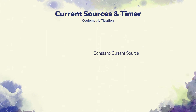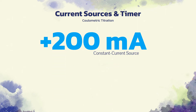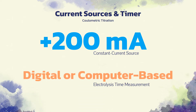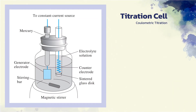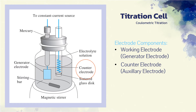The constant current source for a coulometric titration is an electronic device capable of maintaining a current of 200 milliamperes or more, that is constant to a few hundredths percent. Such constant current sources are available from several instrument manufacturers. The electrolysis time can be measured very accurately with a digital timer or a computer-based timing system. This figure shows a typical coulometric titration cell, consisting of a working electrode at which the reagent is produced, and a counter or auxiliary electrode to complete the circuit. The working electrode used to generate reactants in situ is often referred to as the generator electrode.